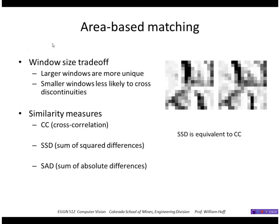A few notes on the correlation approach: there is a trade-off in window size. Larger windows are more uniquely matchable, but smaller windows are less likely to cross depth discontinuities. Instead of cross-correlation, you can also use sum of squared differences or sum of absolute differences. There's also a useful website with a lot of information about stereo, and there are commercial systems such as Point Grey that implement these ideas.